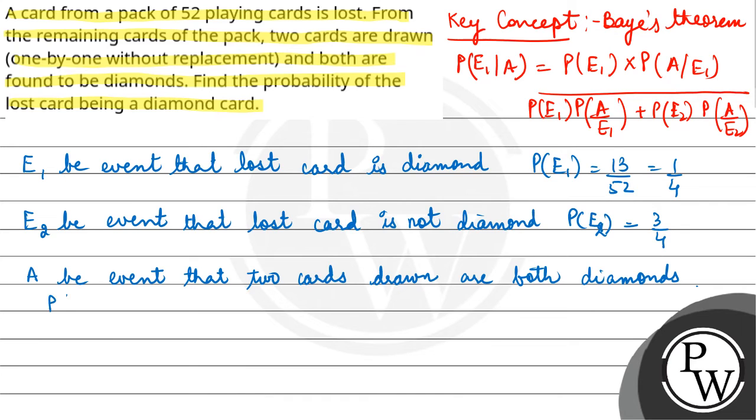So P(A given E1), if E1 situation, now one diamond is lost, 12 diamonds remain, from which we take two. And total is 51 C2. So this is equal to 66 by 1275.